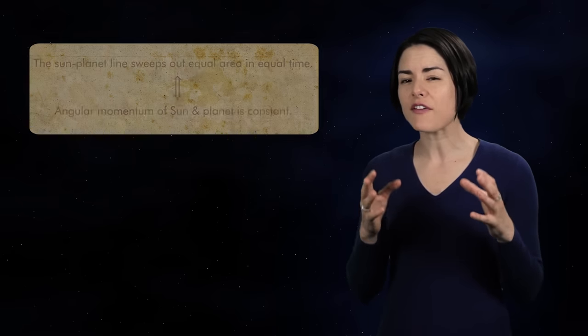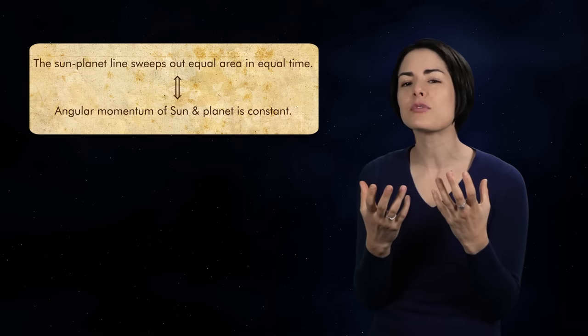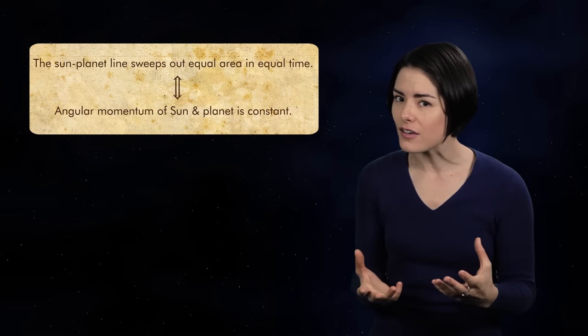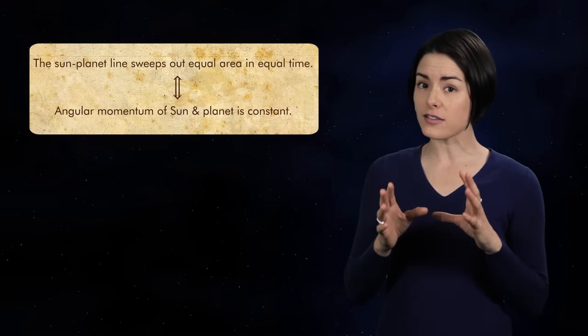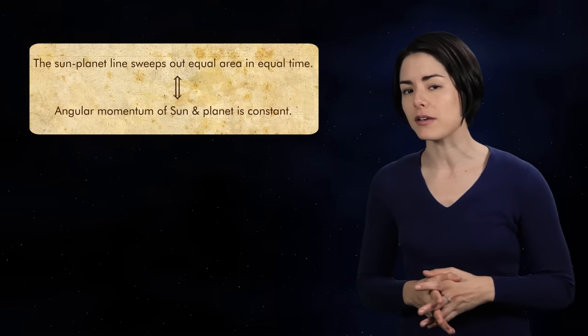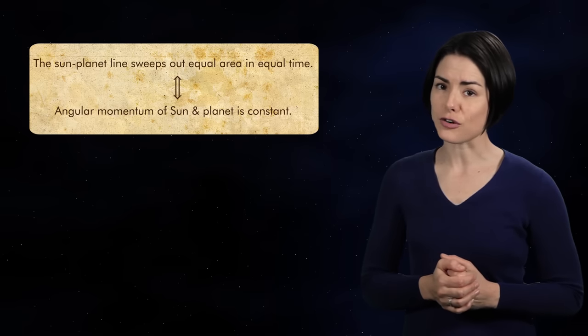Just as an ice skater spins faster after pulling her arms closer to her body, Mars has to move faster when it gets closer to the Sun. Kepler's statement that the area swept out by the Mars-Sun line is constant is equivalent to the statement that angular momentum is constant as well. That is to say, that it's conserved.